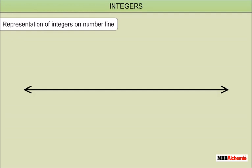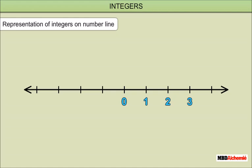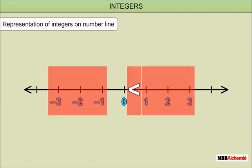Representation of integers on a number line: draw a line and mark some points at equal distances on it; mark zero at its middle point. Points to the right of zero are positive integers, marked as positive 1, positive 2, positive 3, and so on (or simply 1, 2, 3, and so on). Points to the left of zero are negative integers, marked as negative 1, negative 2, negative 3, and so on.